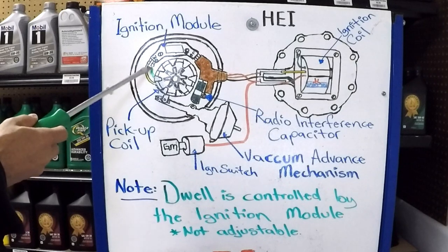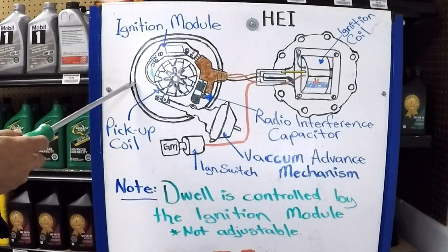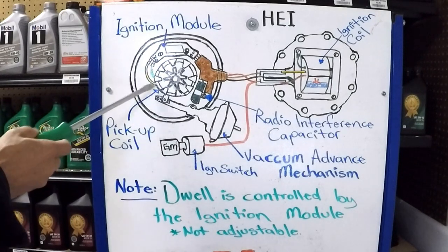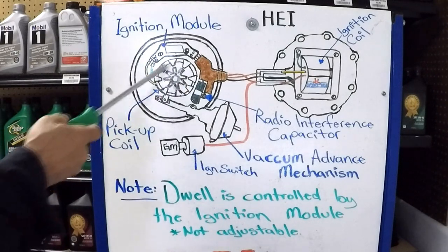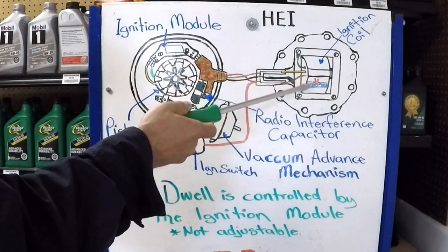Another test that you can do, make sure it's not shorted to ground, so use the lead to touch one of the wires and the other one, the metal part of the distributor. It should be infinite. So those are a couple of tests that you can do if you suspect that you have a bad pickup coil. Remember, it all starts right here. It goes from here to the module and then to the ignition coil itself.